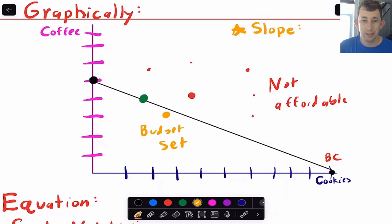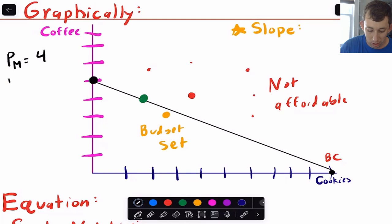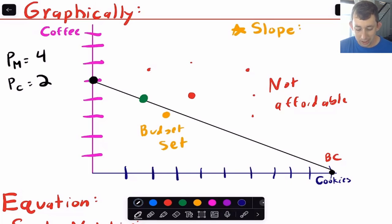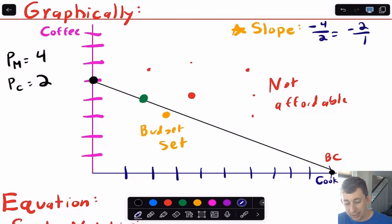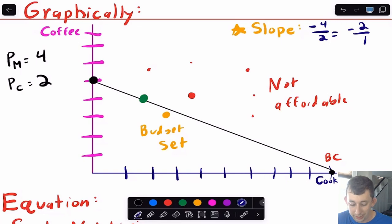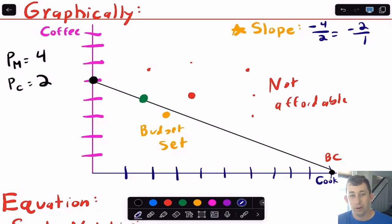One useful thing to know about the budget constraint is that the slope has a meaning. The price of coffee mugs PM equals $4, and the price of cookies PC equals $2. We can think about the trade-off Bill faces: for every mug he gives up, he gets two more cookies. So the slope is negative four over two, or minus two, representing that for every coffee mug Bill gives up he gets two cookies, and to get another mug he must give up two cookies.